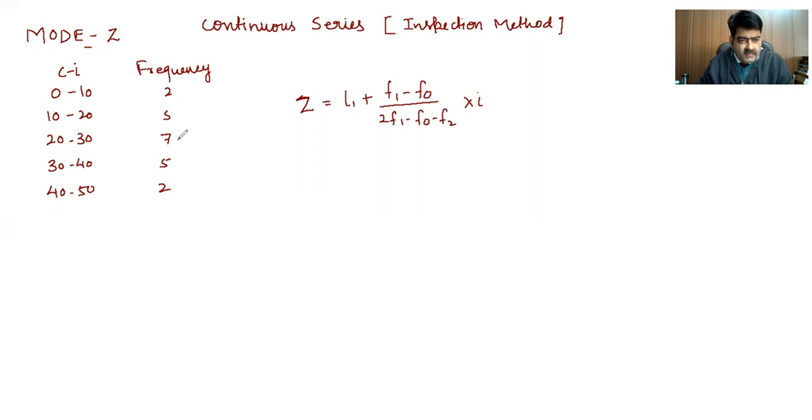By inspection, you can see the highest frequency is 7, and this is in front of 20 to 30. That means your mode is in between 20 to 30. For the calculation of actual mode, we have to apply a formula.